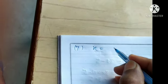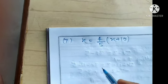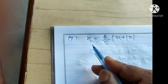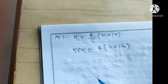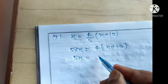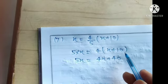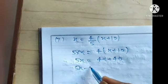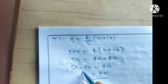Question number 7 is: x is equal to 4 upon 5 in bracket x plus 10. Cross multiply 5 to the LHS. You get 5 into x is equal to 4 into bracket x plus 10. Opening the bracket, x is multiplied by 4, giving 4x plus 40. Transposing x to LHS, you get 5x minus 4x is equal to 40. This means x is equal to 40.